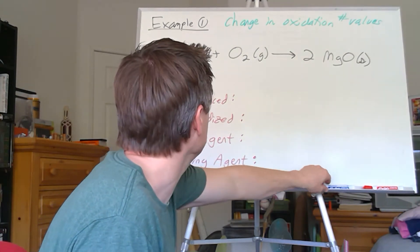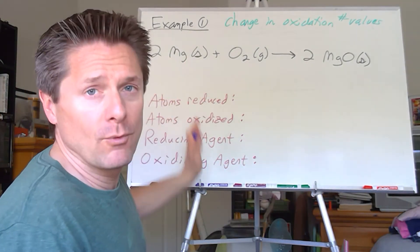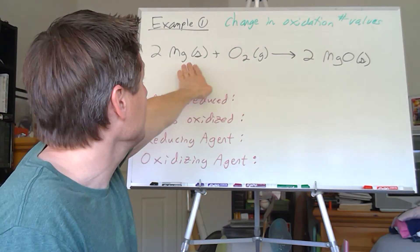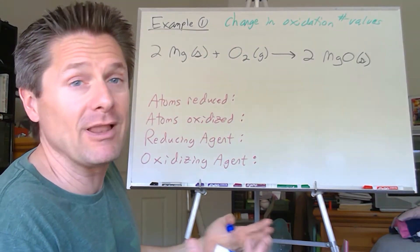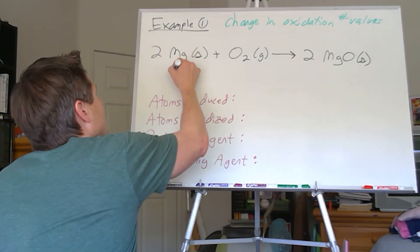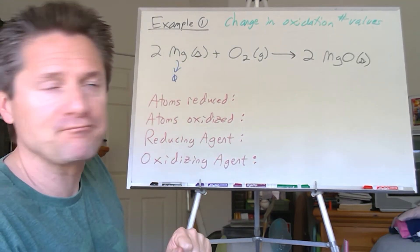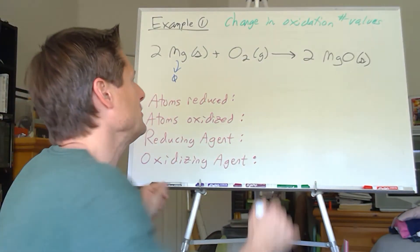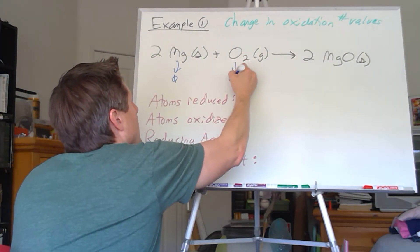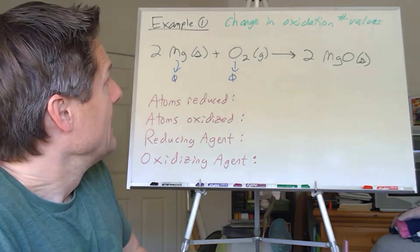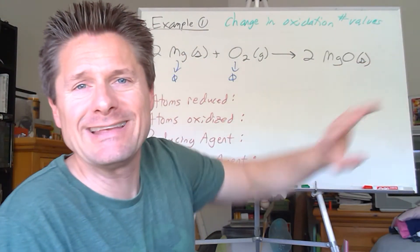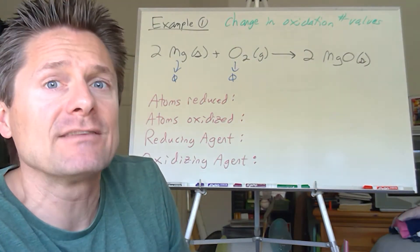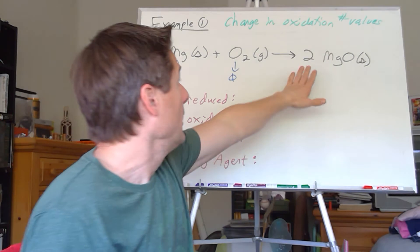Let's take a look at our oxidation numbers. Now remember the rules. Elements are always going to be zero. So magnesium solid, the same number of electrons as protons, so that has an oxidation number of zero, all of them. Same with each oxygen atom in the diatomic oxygen molecule. Those are all going to have oxidation numbers of zero. Now here you see the oxygens in a compound, magnesium's in a compound. It's highly unlikely it's going to be zero.